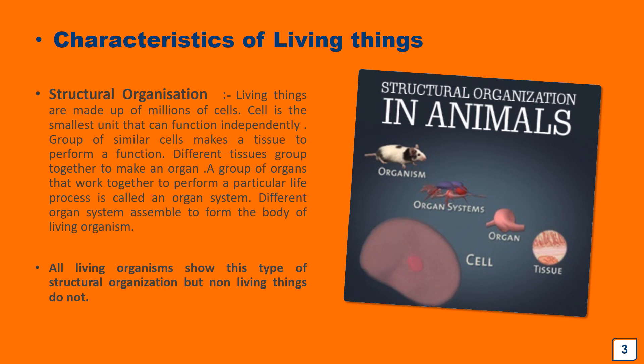Unicellular organisms are those whose body is made up of only a single cell, and all body functions take place inside that single cell. Examples include amoeba, paramecium, euglena, and bacteria. On the other hand, organisms we generally see around us — like human beings, plants, dogs, house flies, and mosquitoes — are multicellular, meaning their body is made up of many cells. Multi means many; cellular means cells.